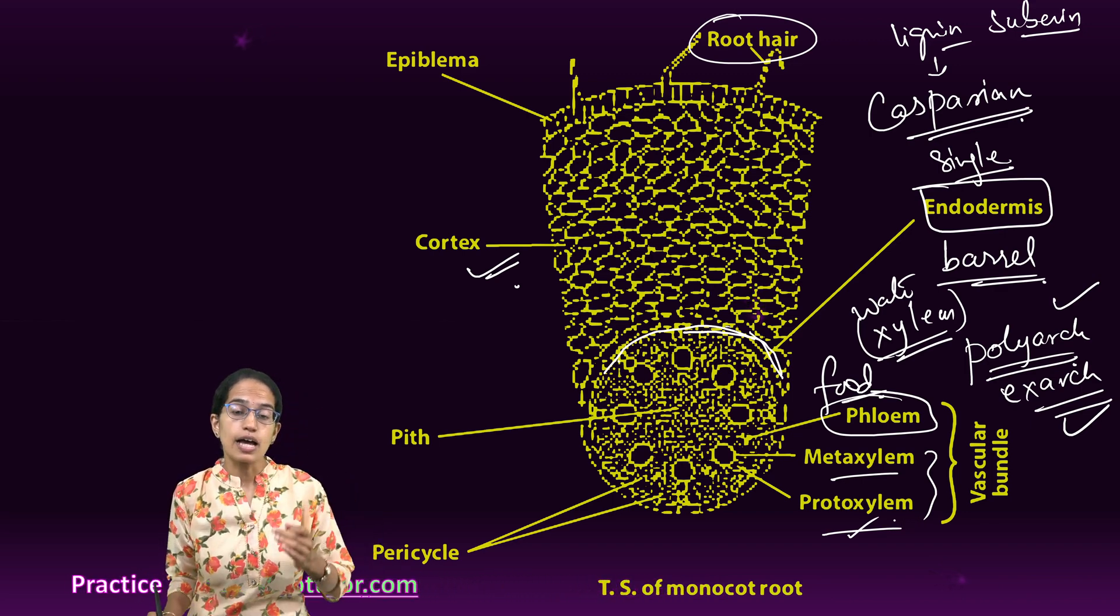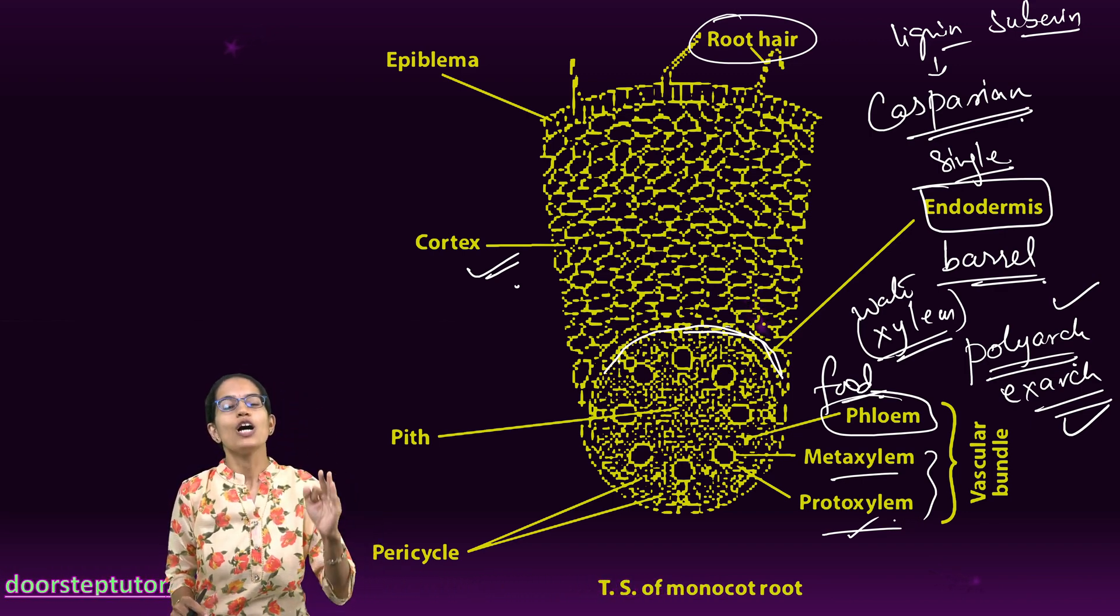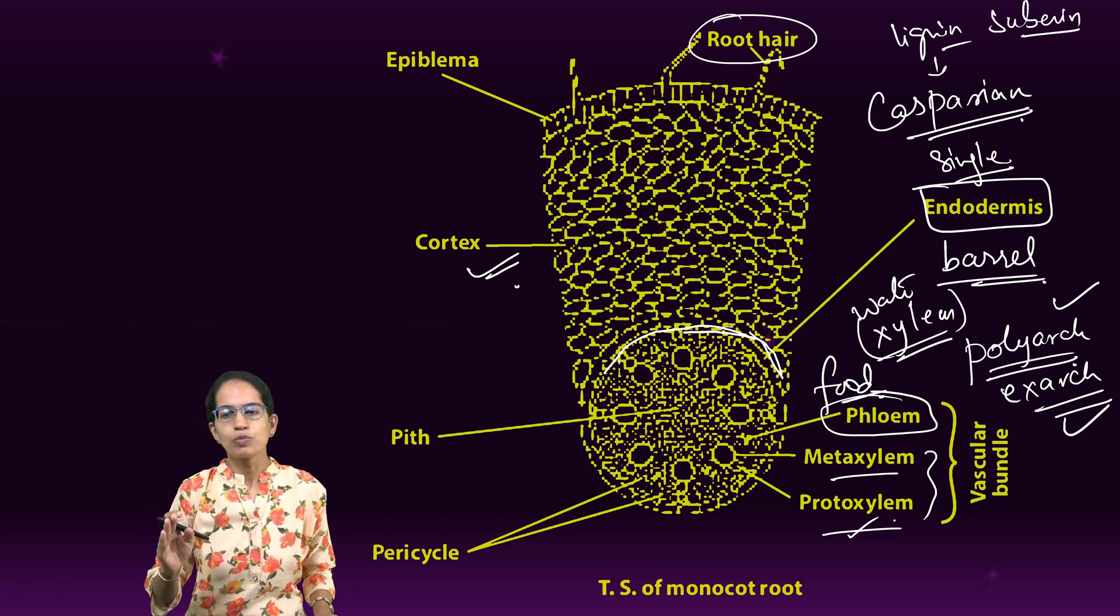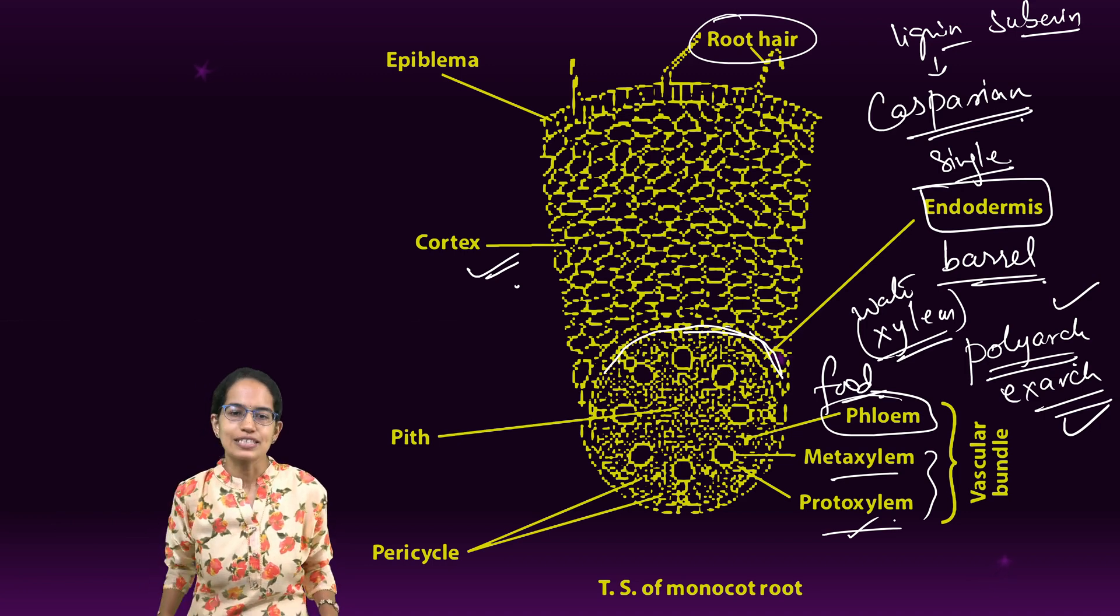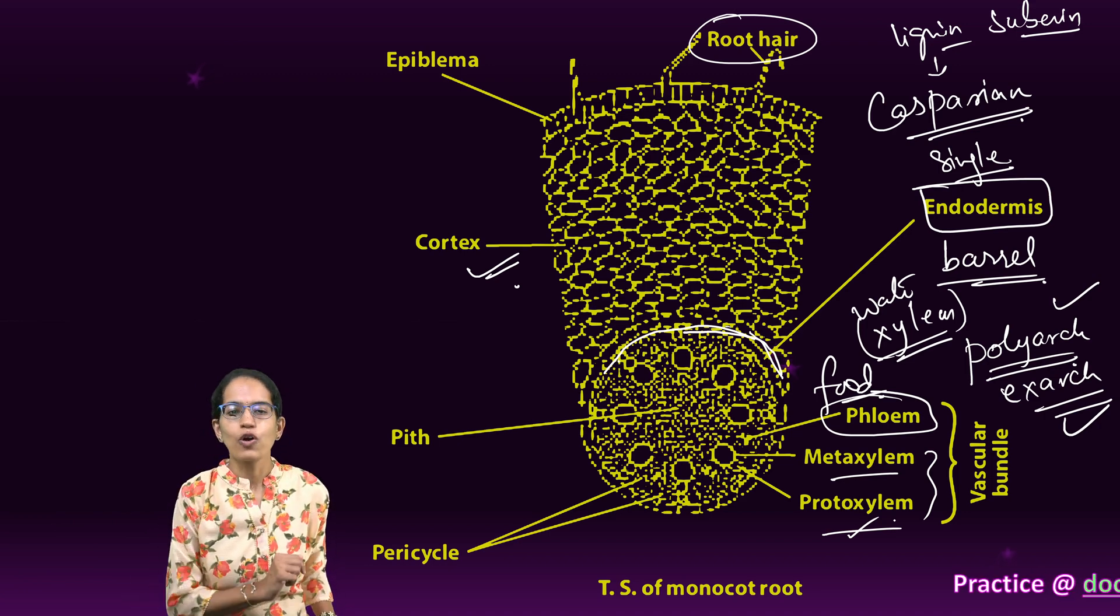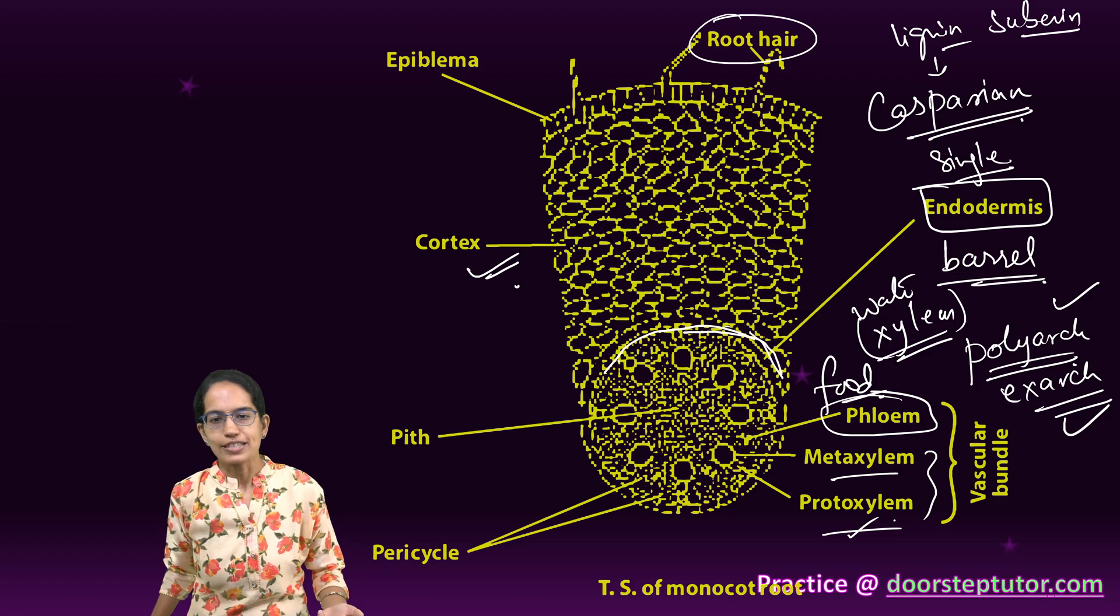This was a quick summary of the anatomy of monocot root. In the next lecture we will talk about monocot leaf and then monocot stem. Stay tuned and subscribed for further updates. Follow the links below for more practice questions.